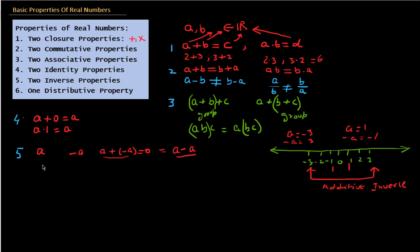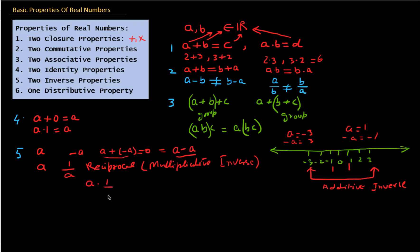Similarly, for multiplication, if there is a number A, then there exists a number 1 divided by A — the reciprocal of A, also called the multiplicative inverse. A multiplied by 1 over A equals 1. For example, if A is 8, then its reciprocal is 1 divided by 8. Multiplying 8 by 1/8 gives a result of 1.